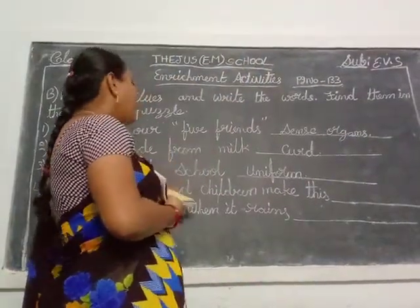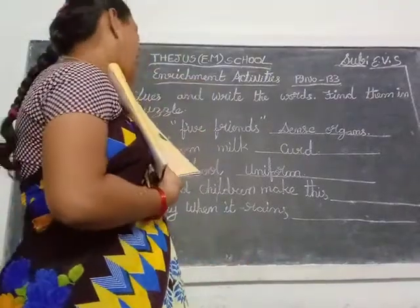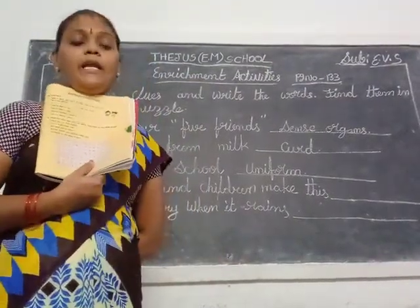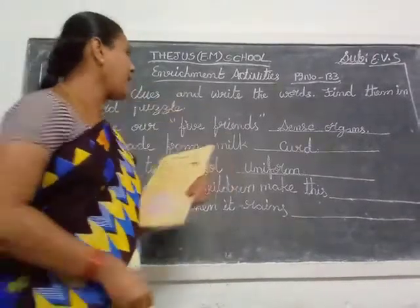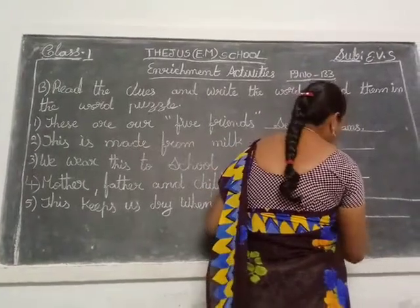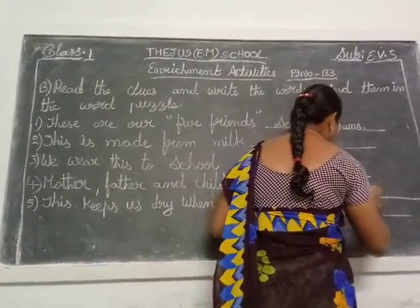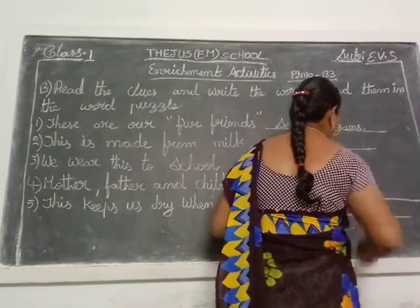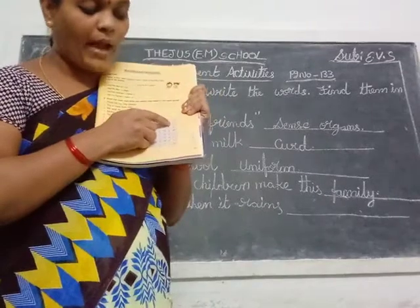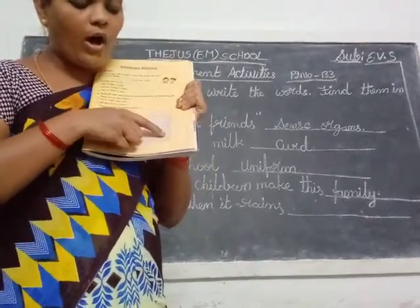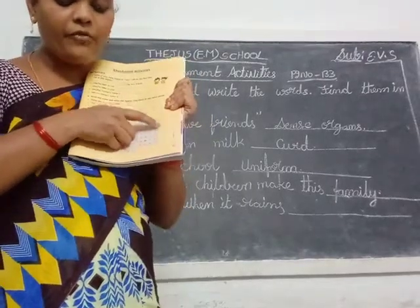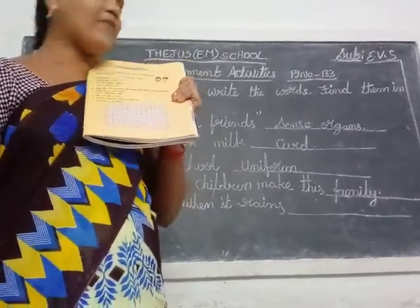Mother, father and children make this — what is it, children? A family. Yes! So you write the family spelling here and circle this word in the word puzzle also. All letters are capital — F-A-M-I-L-Y. Family. You circle that word. Next.